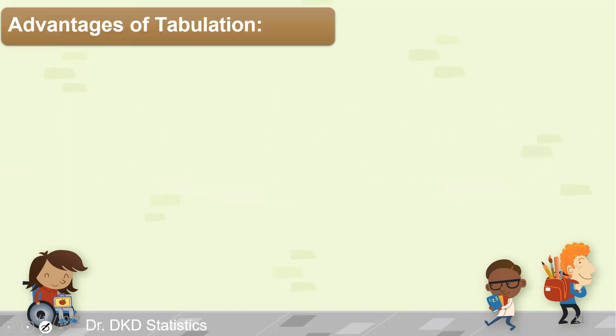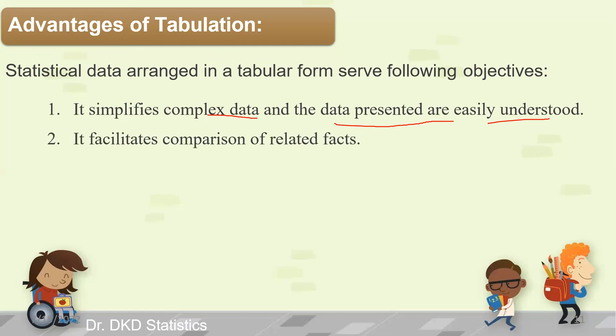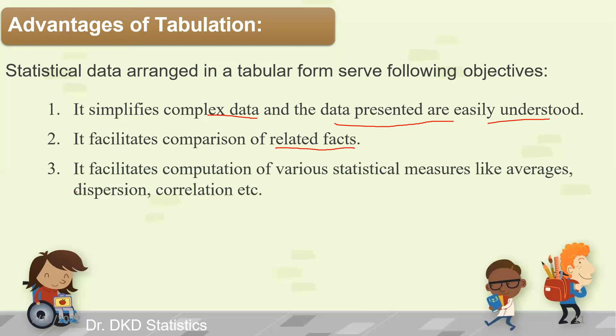What are the advantages of tabulations? Statistical data arranged in tabular form serves the following objectives: it simplifies complex data and the data presented are easily understood. It facilitates comparison of related facts and computation of various statistical measures like averages, dispersions, correlations, and other kinds of statistical findings.